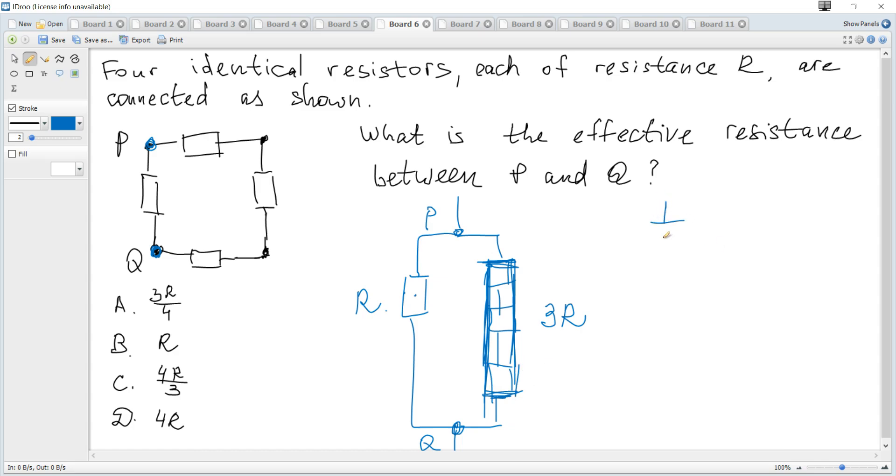And for parallel we apply formula 1 over R total equals 1 over R1 which is R plus 1 over 3R because we consider these three as one but with resistance of 3R.